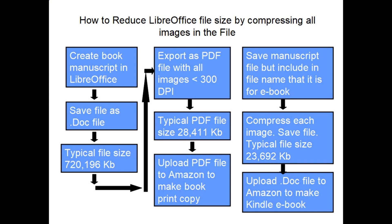I upload that PDF file to Amazon and use it to make the printed copy of the book. To make the eBook version, I go back to my original manuscript, change the file name to indicate it's for the eBook, and resave it with a new file name — that's the 720,000 kilobyte file. I then go through one at a time and compress each image. When I'm done I save that file; it's still in .doc format but it reduced from 720,000 kilobytes down to only 23,000 kilobytes or 23 megabytes. I then take that .doc file and upload it to Amazon to create the Kindle eBook version.